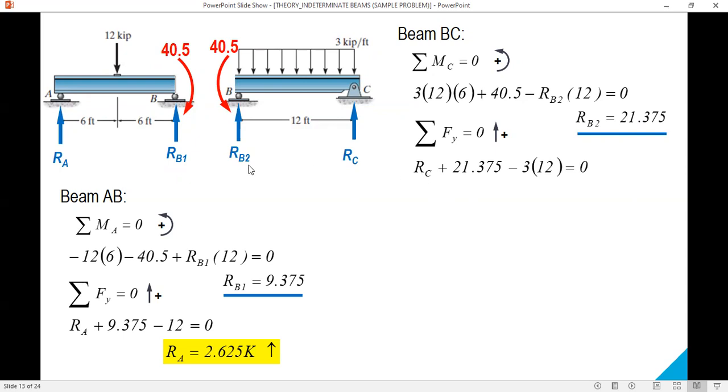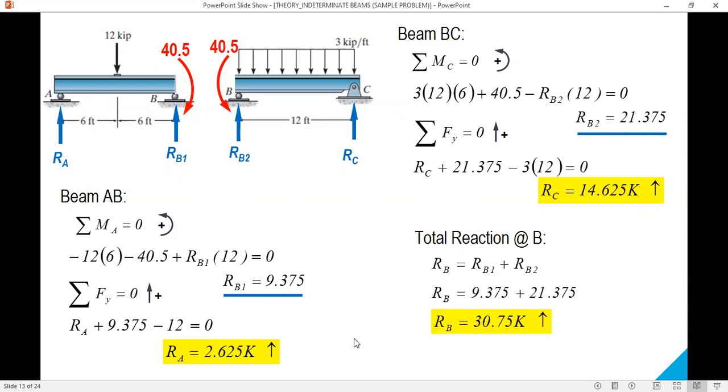RC is equal to 14.625. And to solve for RB we will add RB1 and RB2, and the value is 30.75 kips. You can check these values using the other two methods; the video is already available on the YouTube channel.